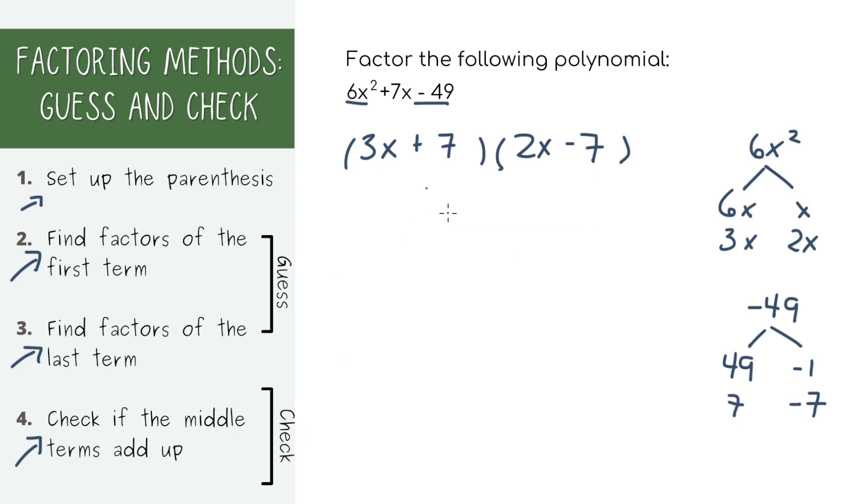So now our options are to switch out your factors. Maybe it's supposed to be 6 and 1 instead of 3 and 2. You can also switch up the order, so maybe it's 2 and 3 instead of 3 and 2. And also because of this negative, maybe we need to switch the negative, so it's negative 7 and 7 instead of 7 and negative 7.